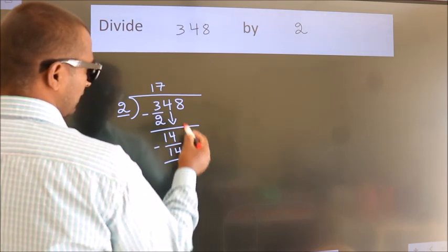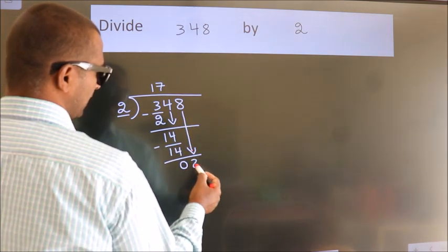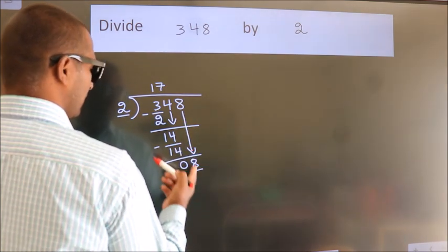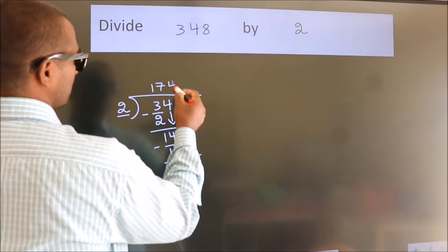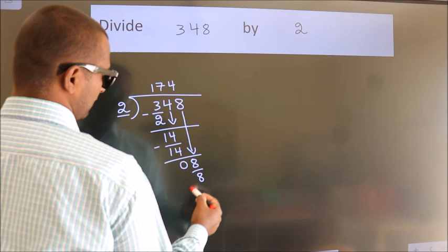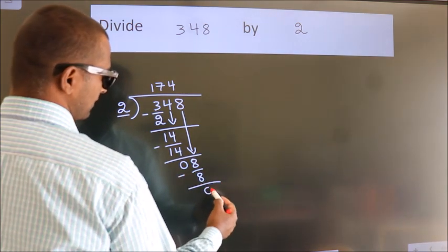After this, bring down the beside number. So 8 down. So 8. When do we get 8? In 2 table. 2 4s 8. Now we subtract. We get 0.